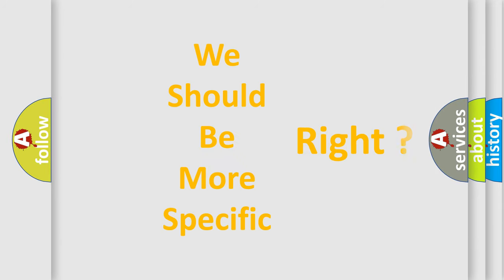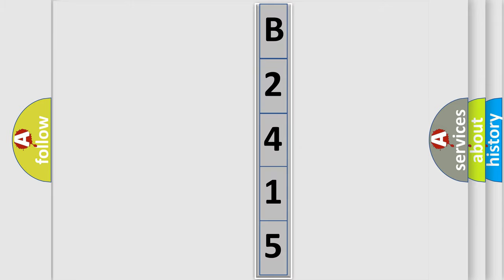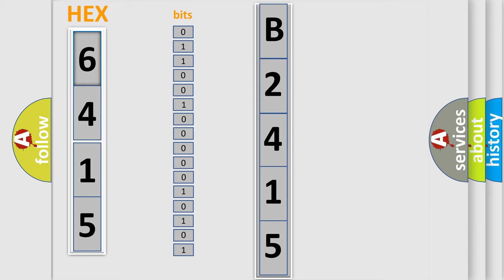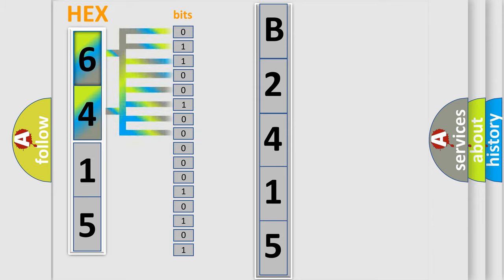The following demonstration will help you look into the world of software for car control units. The error code is split into two bytes consisting of 16 bits. One bit is the basic unit that each computer works with. The bit has two logical states: zero, low level, and one, high level.